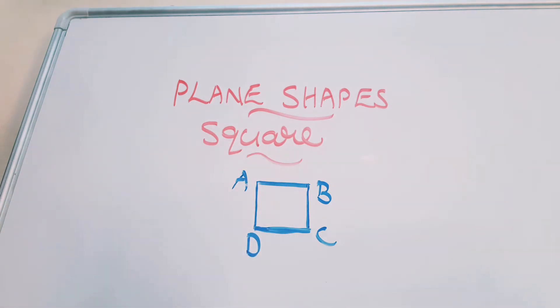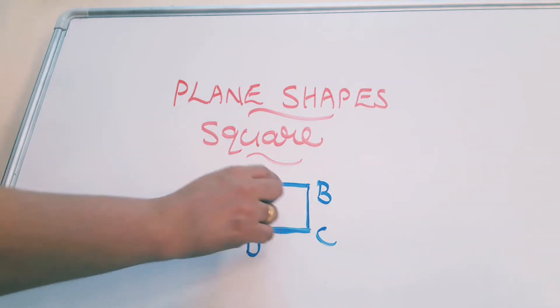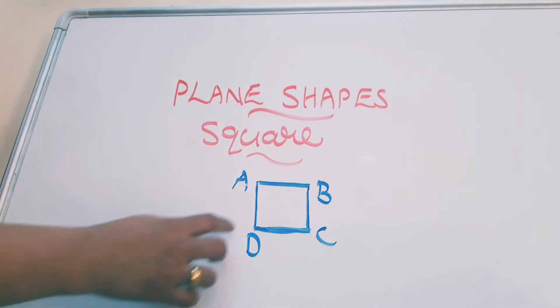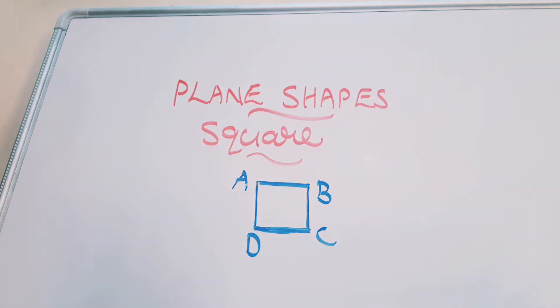AB. Same way how we did in rectangle. AB, BC, CD, DA or AD. AB we can read as AB or BA. No problem.